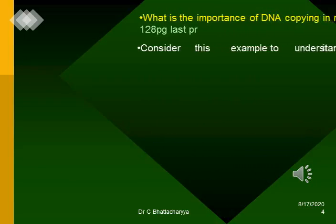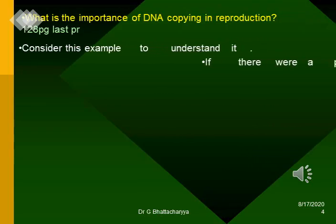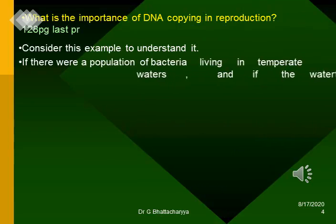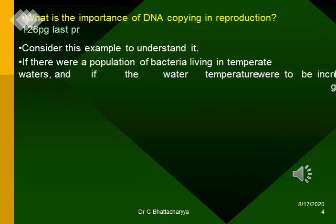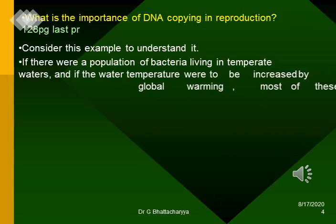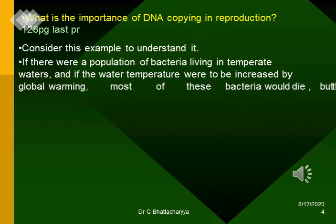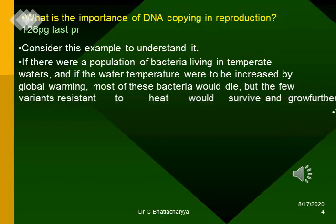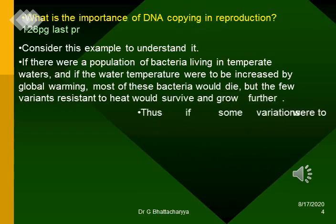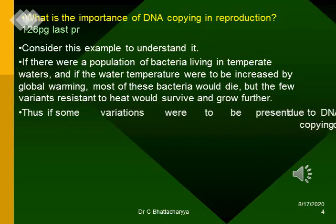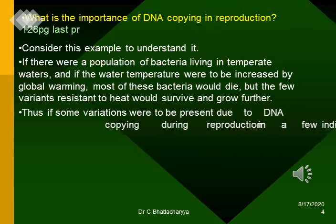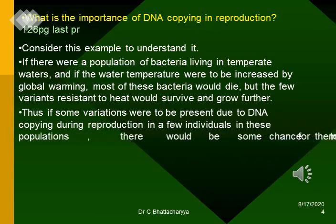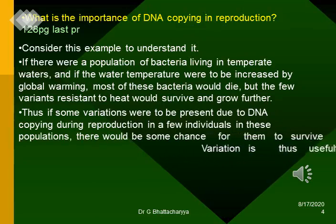What is the importance of DNA copying in reproduction? Consider this example: if there were a population of bacteria living in temperate waters, and if the water temperature were to be increased by global warming, most of these bacteria would die. But if a few variants resistant to heat were to survive and grow further, thus if some variations were present due to DNA copying during reproduction in a few individuals in these populations, there would be some chance for them to survive. Variation is thus useful for the survival of species over time.